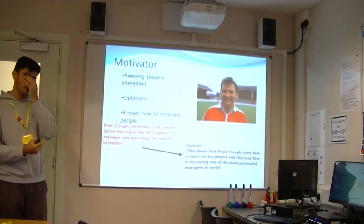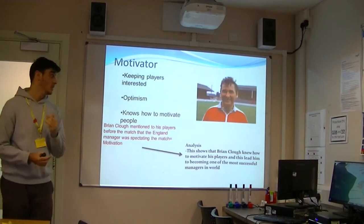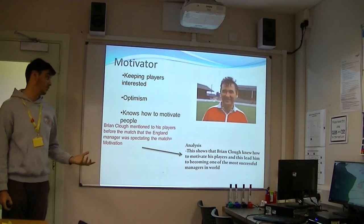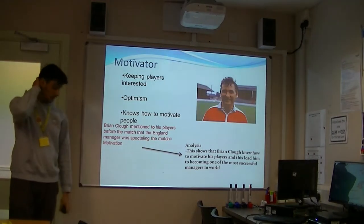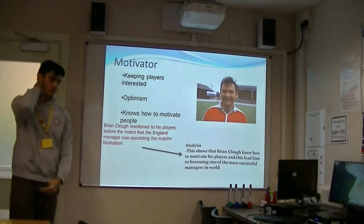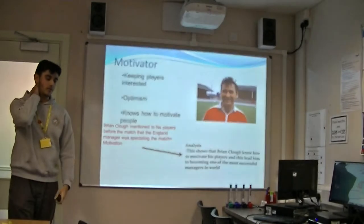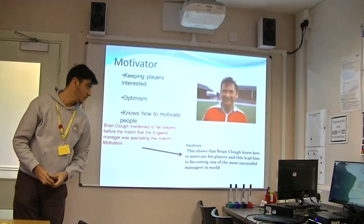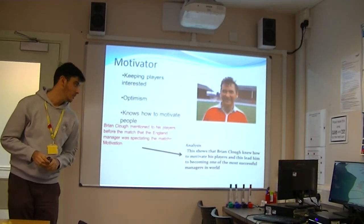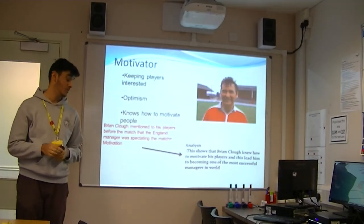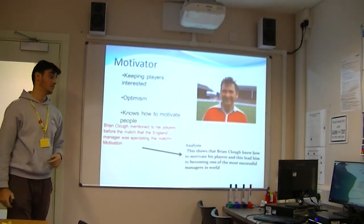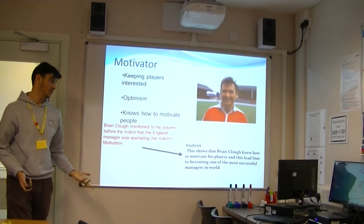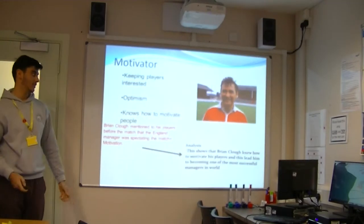A motivator — keeping players motivated requires optimism and knowing how to motivate people. A good example is Brian Clough, who told his players before a match that a famous manager was spectating. This obviously led to motivation for the team because everyone wants to play well and impress, even though he wasn't actually there watching. This shows that Brian Clough knew how to motivate his players, leading him to become one of the most successful managers in the world. Motivating players, even if it means bending the truth, was one of the most important things he did.